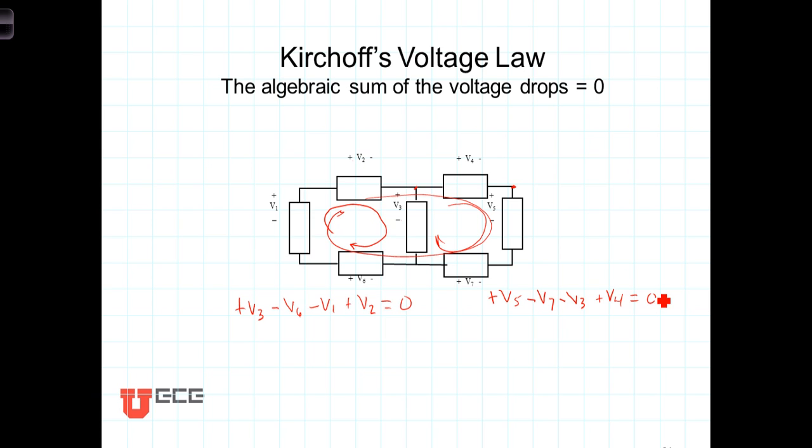Now notice in this left-hand equation, we started at this point and went down, experiencing a voltage drop of V3 plus to minus. So for this equation, we wrote V3 with a positive sign. Over here in this equation, we were going the opposite direction across V3. As we were entering V3 going this way, we entered from the negative terminal and left the positive terminal, so accordingly, going in this direction, we were experiencing a voltage increase. And so V3 has a minus sign on that equation.